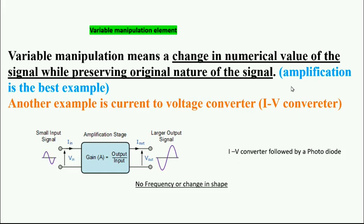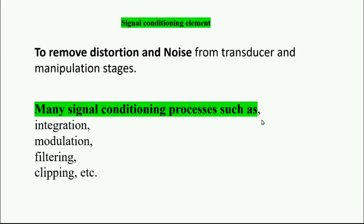Another example is I-to-V converter. For example, a photodiode when light intensity falls, it is first converted into a current. The output of photodiode is current. So in order to process this current, we will convert it into voltage, that is I-to-V converter. Trans-impedance amplifier is a best example. Finally, signal conditioning element means remove the distortion or noise from the transducer or manipulation stages. Modulation is one of the method, integration, filtering, clipping are the methods.